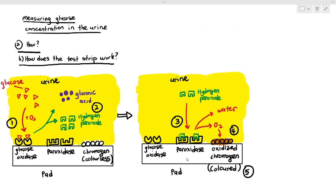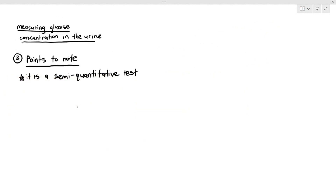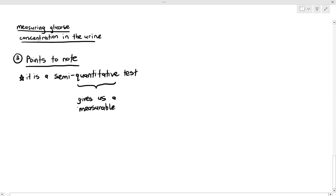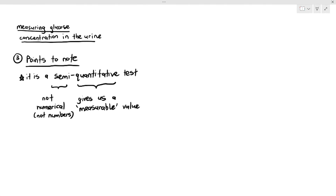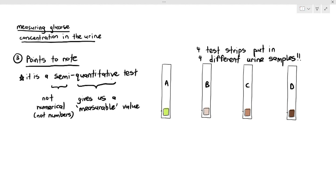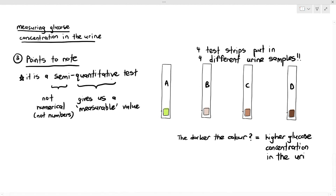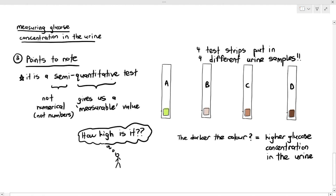This is a semi-quantitative test. Quantitative means it gives a measurable numerical value, but semi-quantitative means it is not fully numerical. For example, with four patients — A, B, C, D — each with a different pad color, a darker color implies a higher glucose concentration. But we don't know exactly how high it is. It tells us whether the concentration is low, medium, or high, but not the precise value. That is what is meant by semi-quantitative.